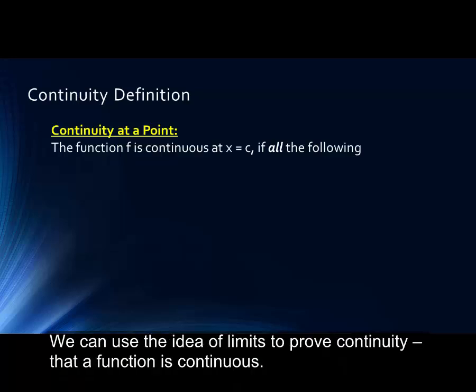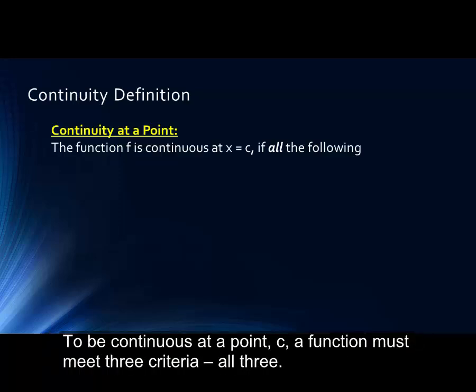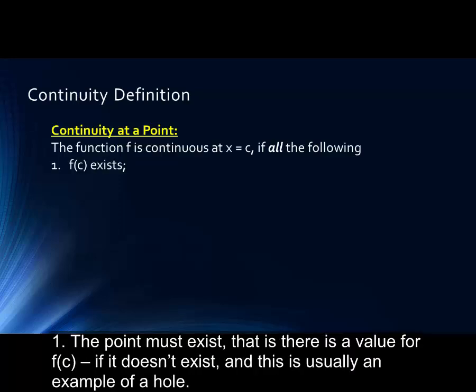We can use the idea of limits to prove continuity. To be continuous at a point c, a function must meet three criteria, all three. First, the point must exist. That is, there is a value for f. If it doesn't exist, this is usually an example of a hole.